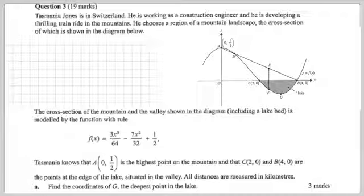Looks very mathematical. Funny about that. So the cross section of the mountain and the valley shown in the diagram, including a lake bed, which looks like this thing here, is modelled by the function with this rule here.